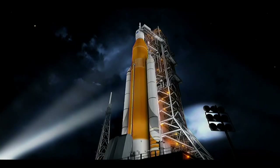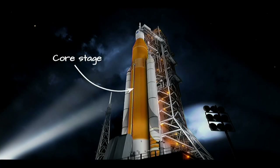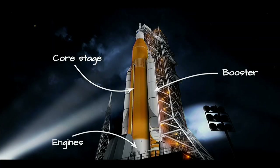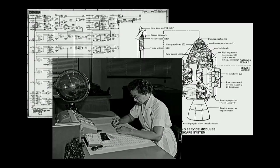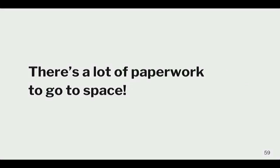After NASA retired the space shuttle, we needed a new way to get to space — this is it. It's the SLS, or Space Launch System, the most complex vehicle ever built, made up of various components: the core stage, the engines, the boosters, and all manner of things. Each of these components is designed and built by different teams within the agency and under those teams, different contractors. In order to literally put it all together — construct the vehicle on the pad — they all need to send each other things like schematics, drawings, or math calculations. There's a lot of paperwork to go to space.